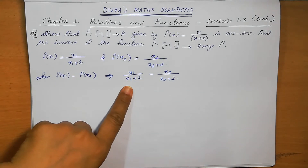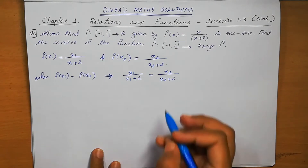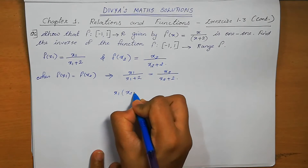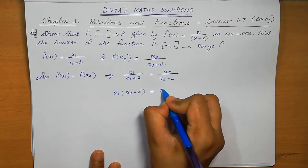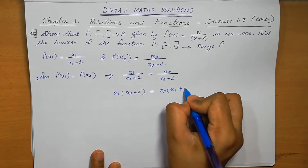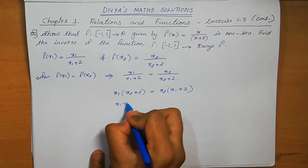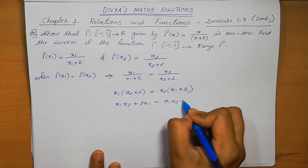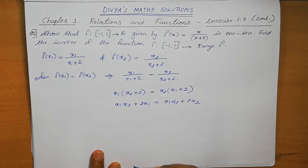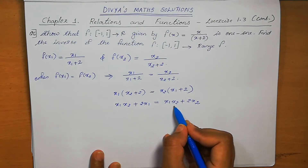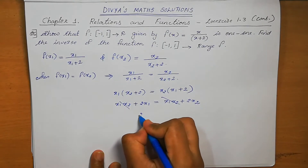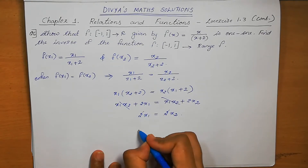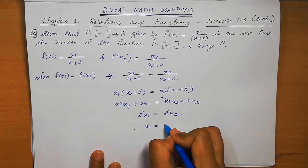We can simplify x1/(x1+2) = x2/(x2+2). Cross multiplying: x1(x2+2) = x2(x1+2). Opening the bracket: x1·x2 + 2x1 = x1·x2 + 2x2. The x1·x2 terms cancel, giving 2x1 = 2x2, and 2 cancels, therefore x1 = x2.